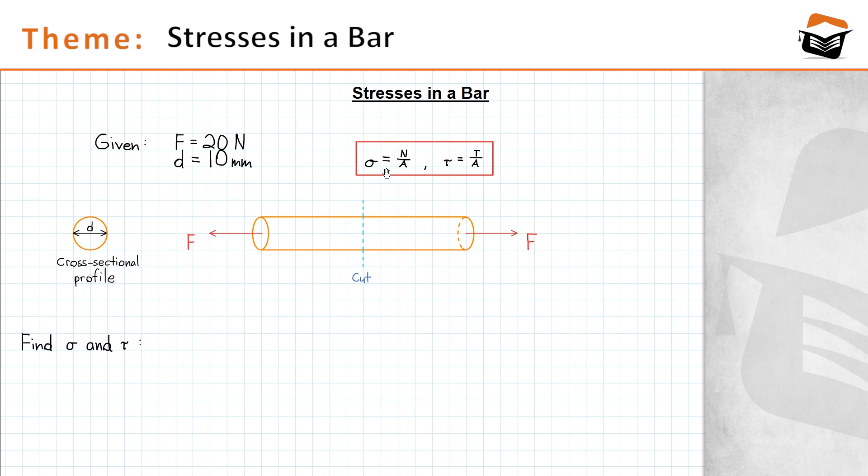The normal stress is computed by dividing the normal force by the cross sectional area and the shear stress can be calculated by dividing the tangential force by the cross sectional area of the profile. The normal force usually acts perpendicular to the cutting area and the tangential force acts parallel to it.